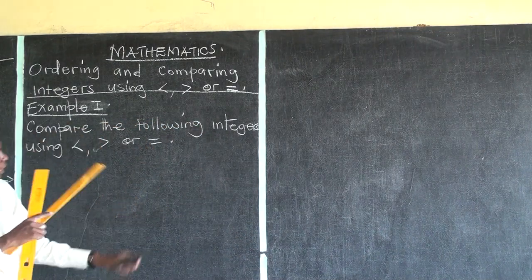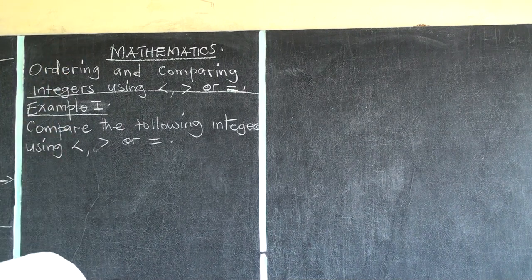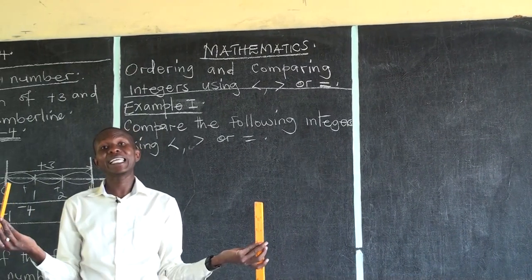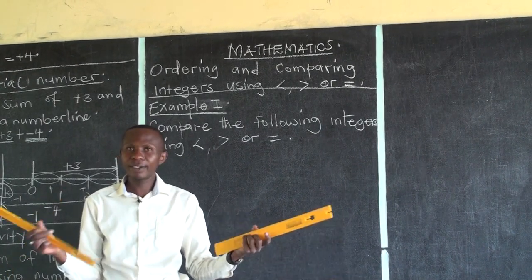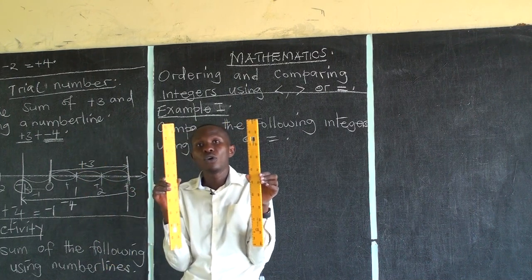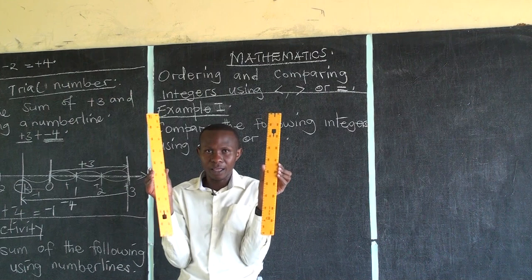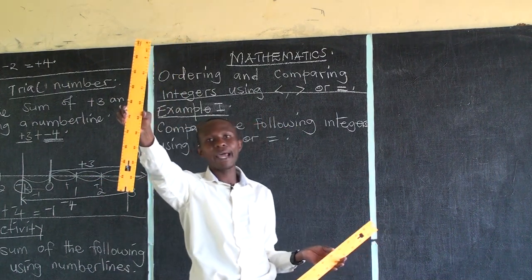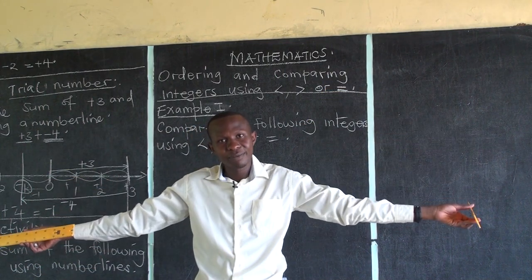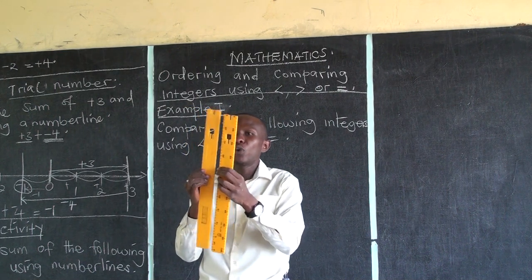Now we come to the last sign: equal to. I have one ruler which I divided into two pieces. I want us to compare these two rulers in terms of length. Let me call this one ruler A and this one ruler B. Among the two rulers, which one is longer? Let me put them together so you can compare.